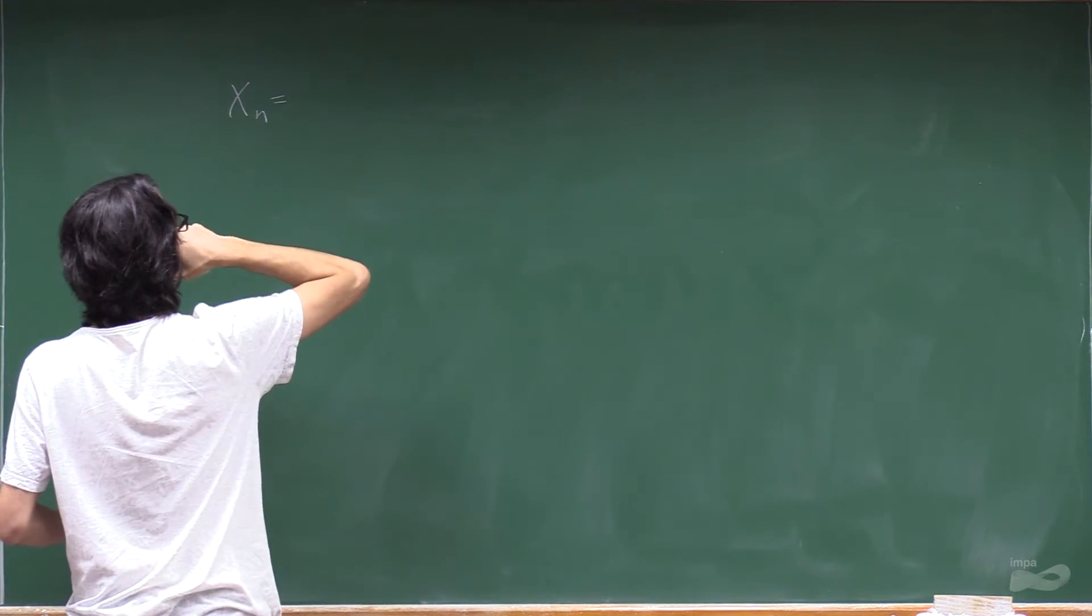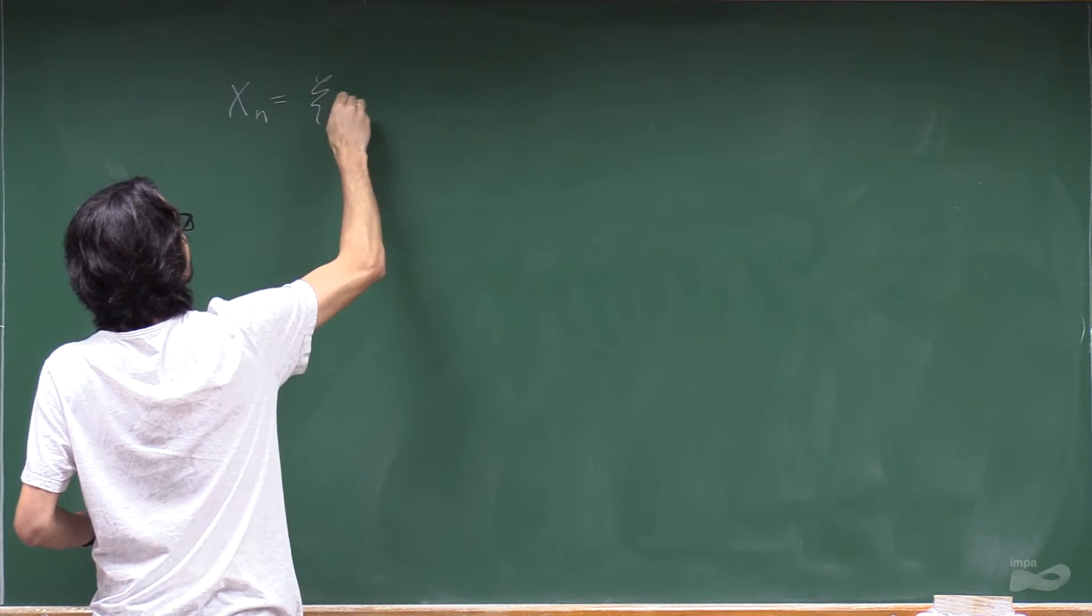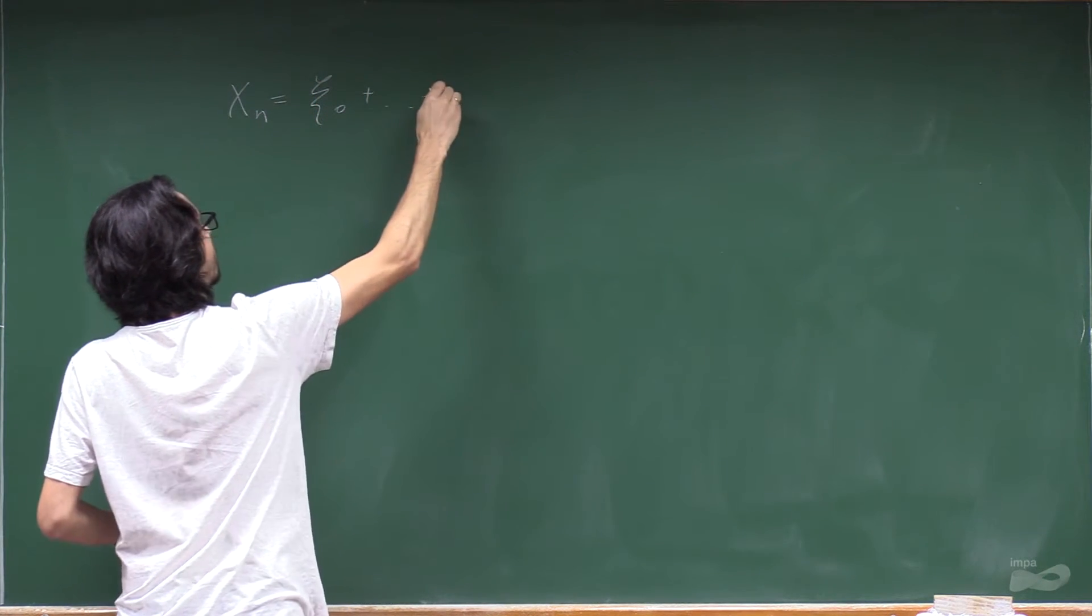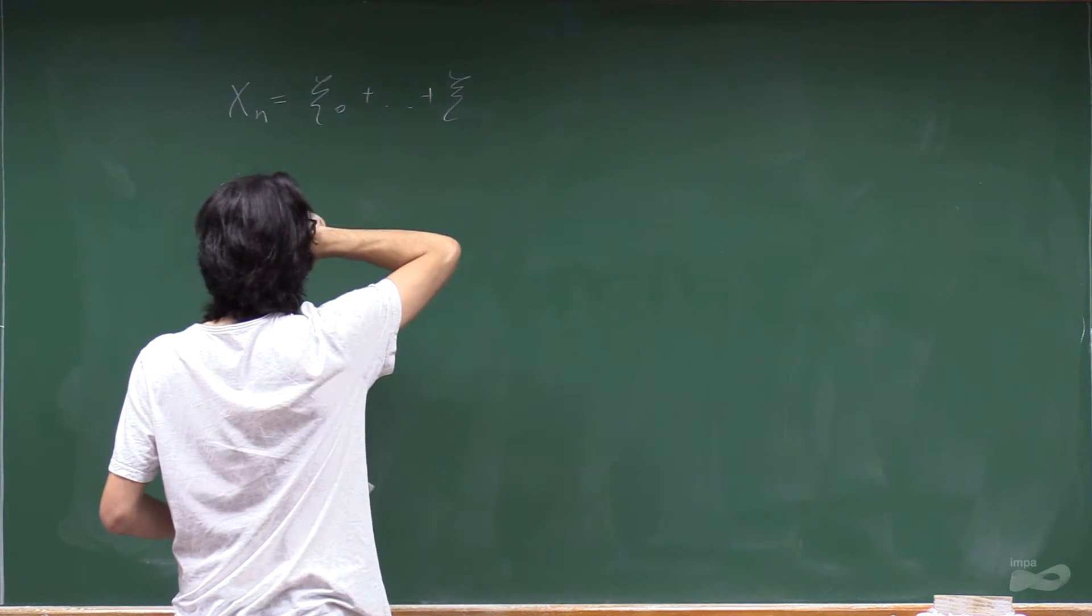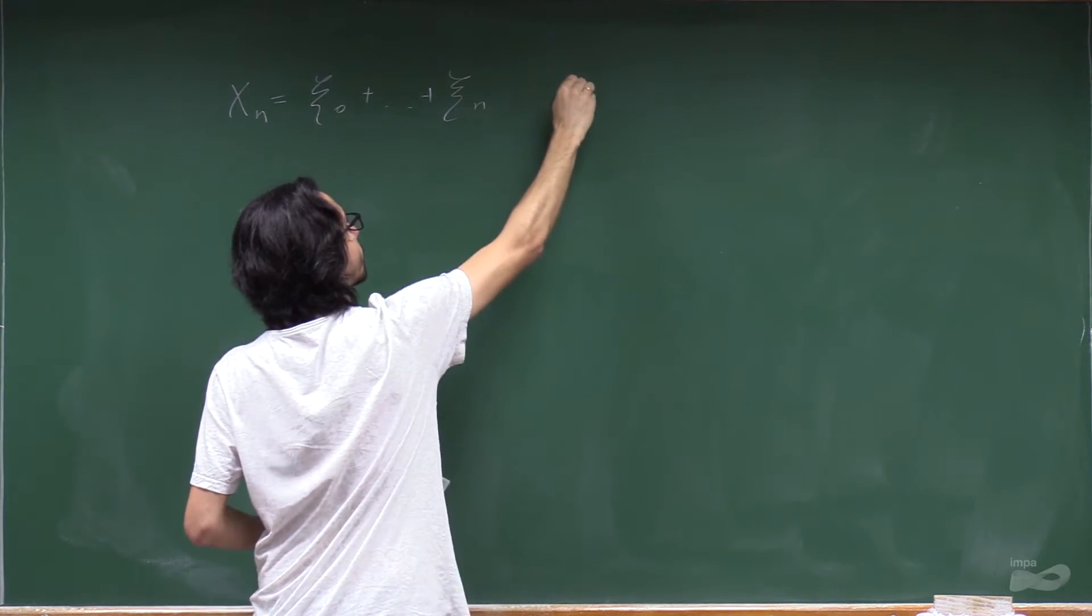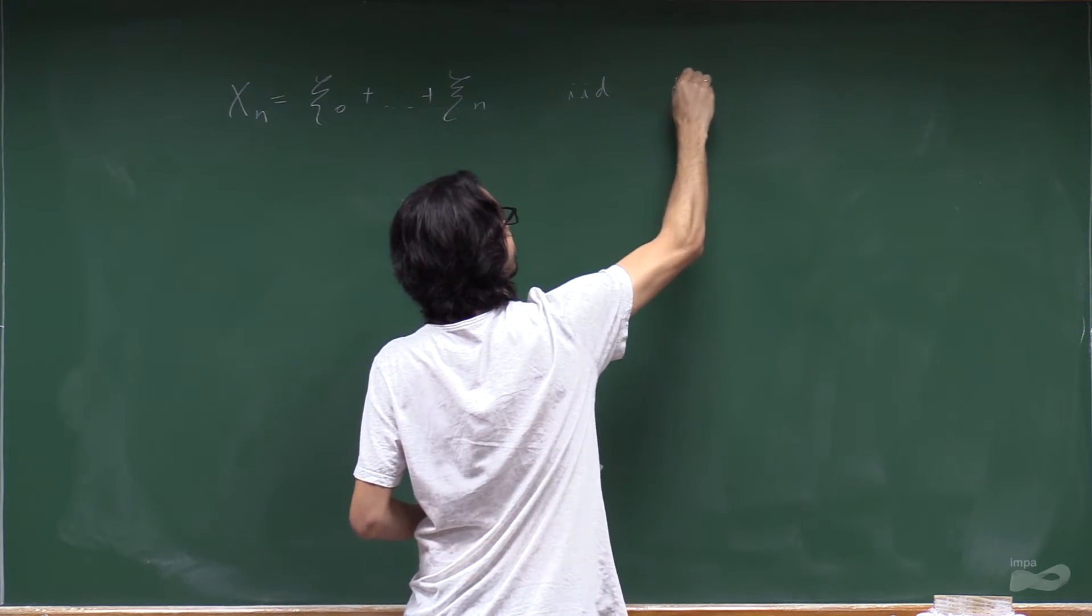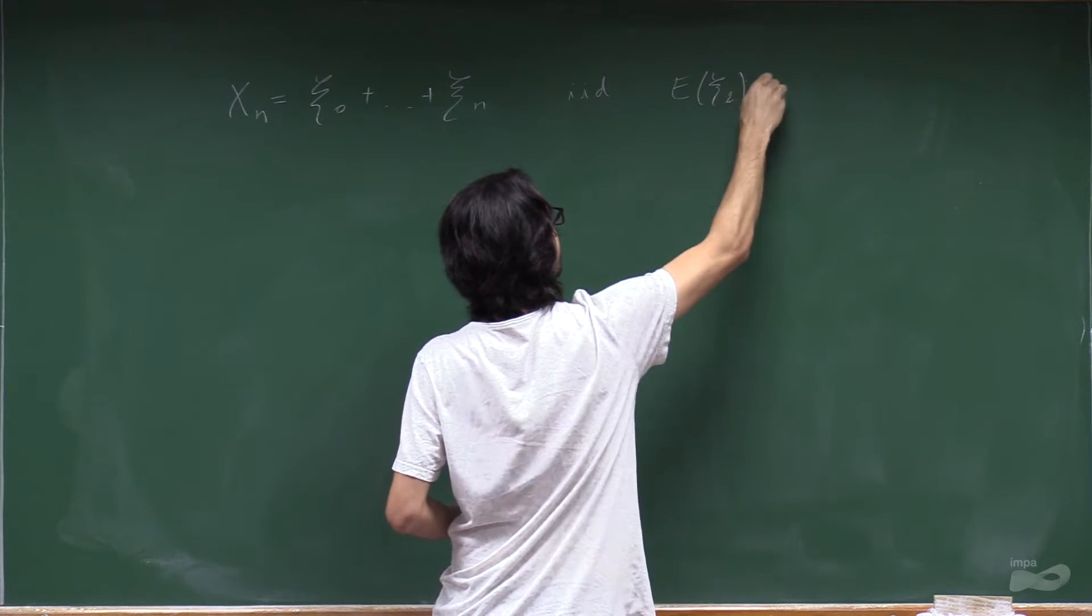let us take, for example, xn, which is a sum of iid random variables with zero expectation.